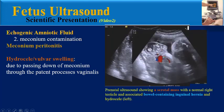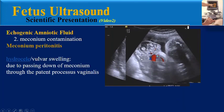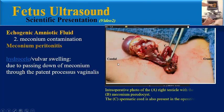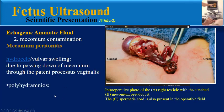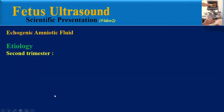On color Doppler there is no flow in the mass. An intraoperative photo shows a meconium pseudocyst attached to the upper pole of the testicle. The last finding of meconium peritonitis is polyhydramnios.